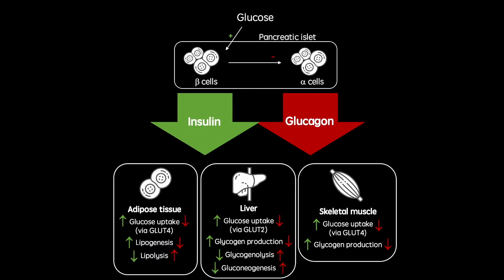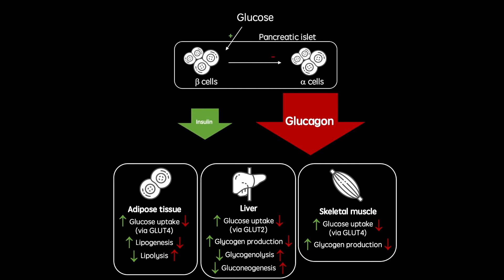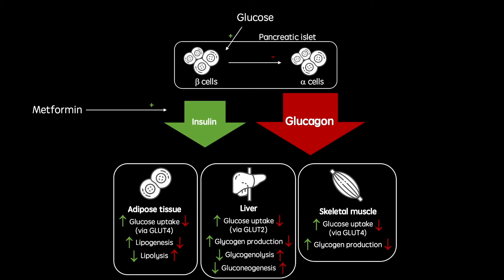However, in type 2 diabetes the insulin arm of this process is diminished. This can be caused by dysfunctional beta cells, resulting in reduced insulin secretion, or reduced insulin sensitivity in peripheral tissues, or indeed both. However, metformin is used to enhance insulin action, and it does so in three main ways.